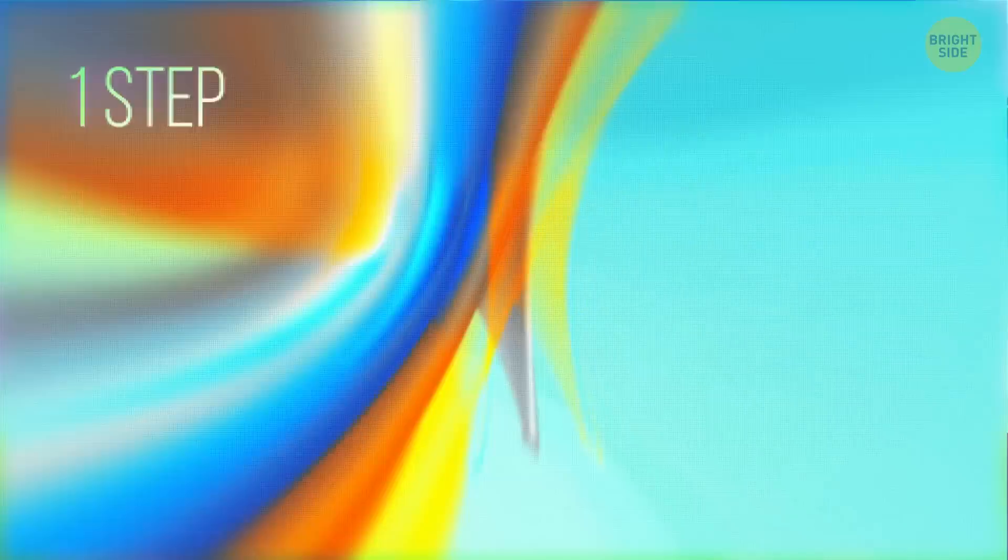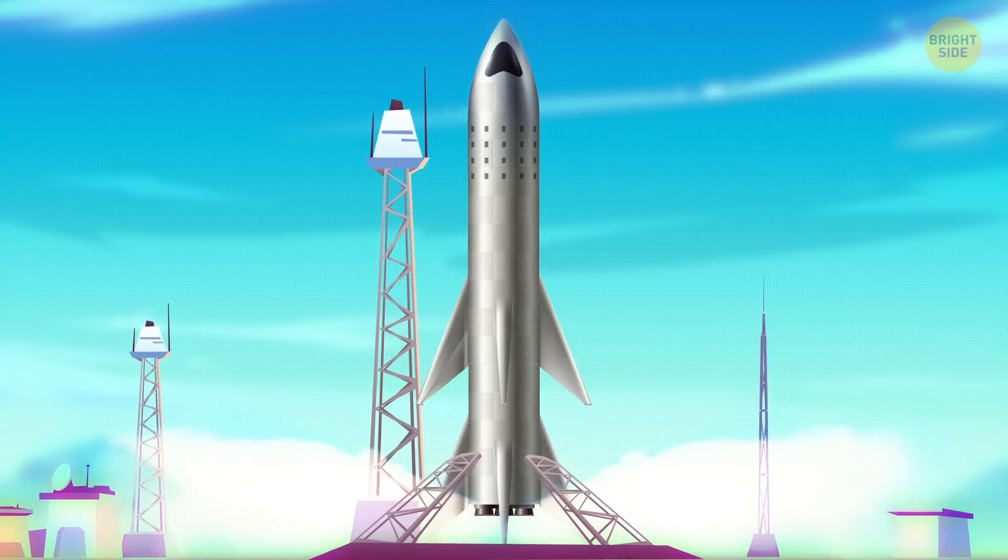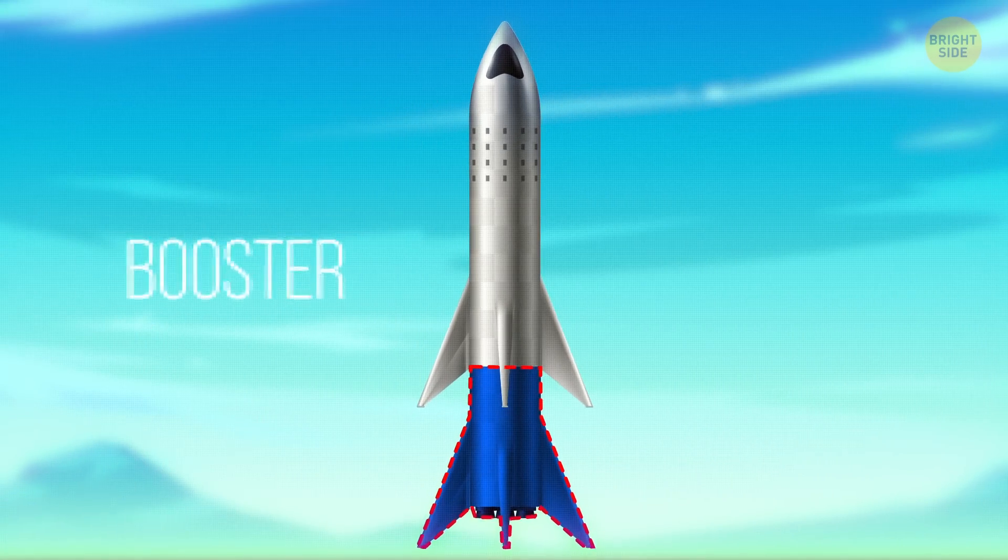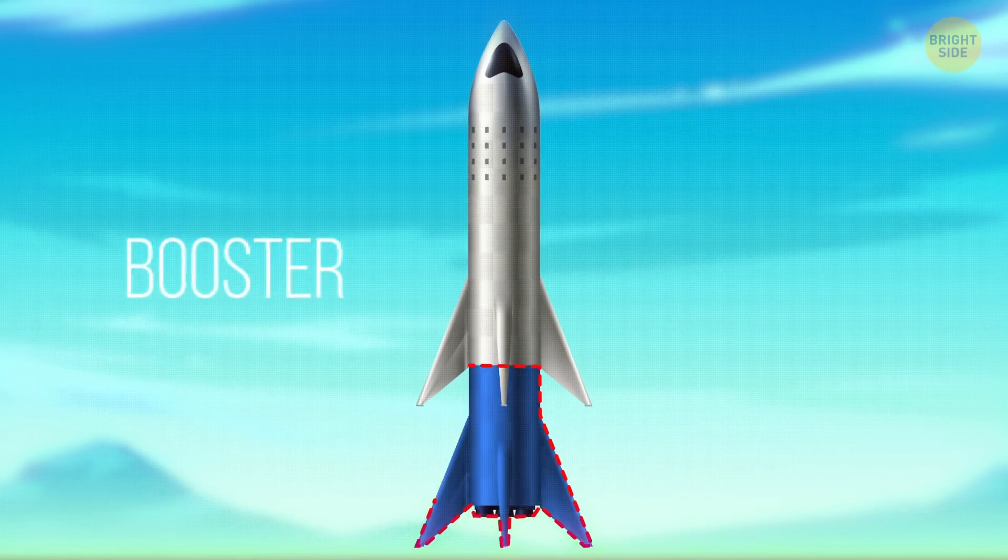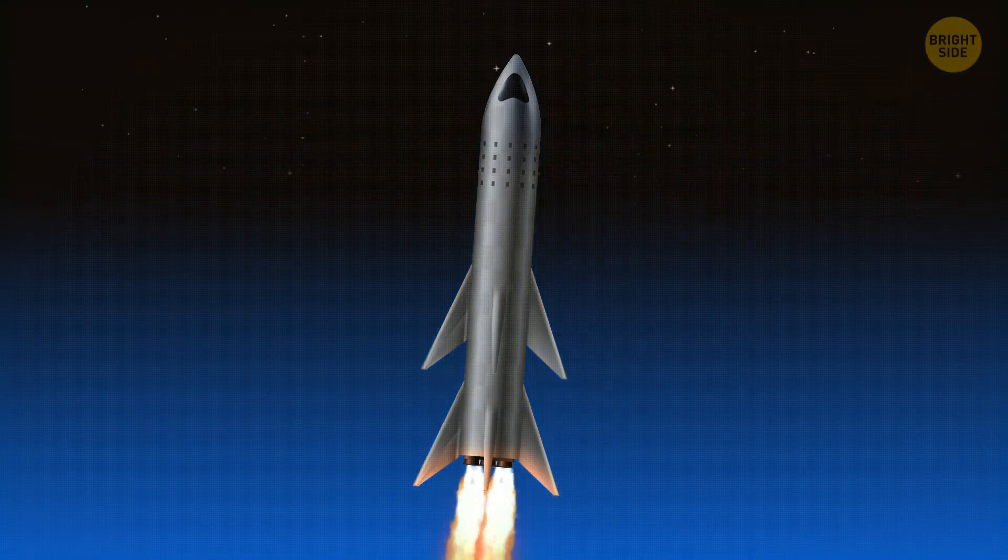We're heading to the launch pad, where the first Starship is being prepared for takeoff. The rocket consists of two parts. The first is the super-heavy booster. It'll help the heavy craft overcome the Earth's gravity and leave our planet. It should take Starship into orbit, then undock and land back on Earth.